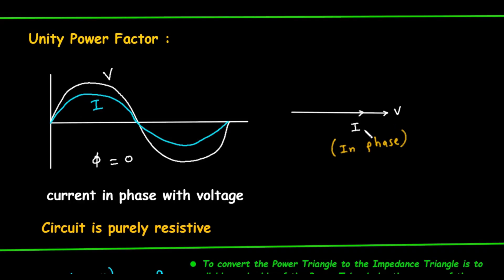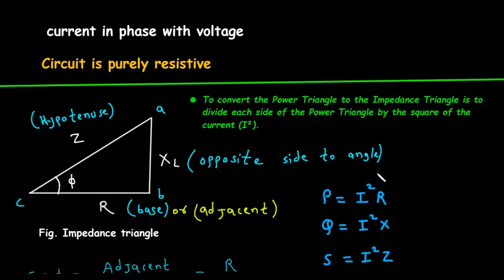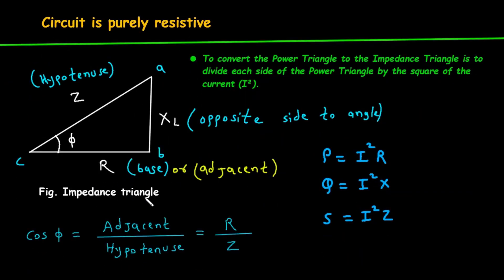Related to the power triangle is another important concept, the impedance triangle. The impedance triangle helps us understand the relationship between resistance, reactance, and total impedance in a circuit. Imagine another right-angled triangle. The horizontal base represents resistance, R. The vertical side represents reactance, which for an inductive load is inductive reactance, denoted as X subscript L. The hypotenuse represents the total opposition to current flow, which is called impedance, Z. The angle in the corner is again our phase angle, Φ. From basic trigonometry, the cosine of Φ is equal to resistance, R, divided by impedance, Z.